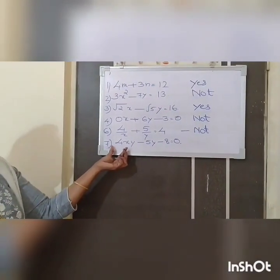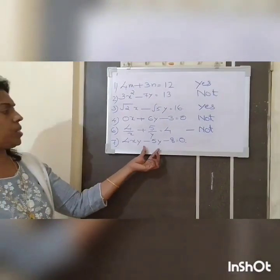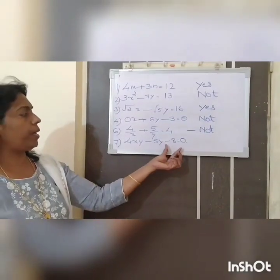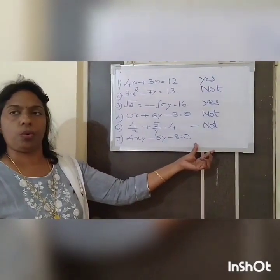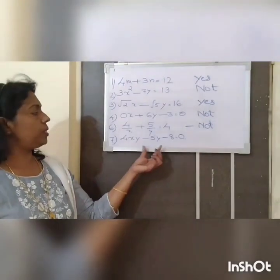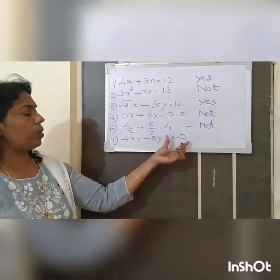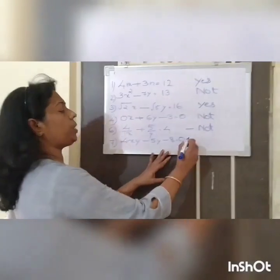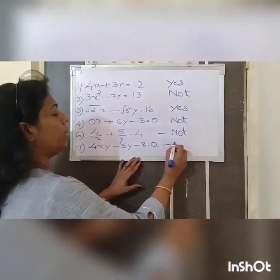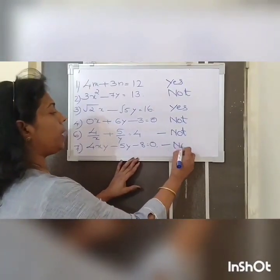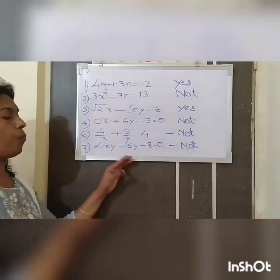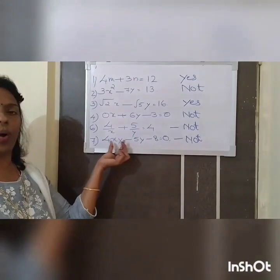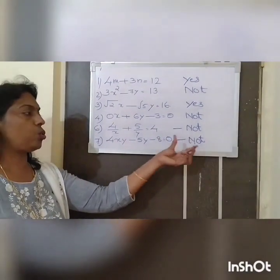The last one: 4XY minus 5Y minus 8 equals 0. This is also not a linear equation. The reason is the degree of X and Y together is 2.